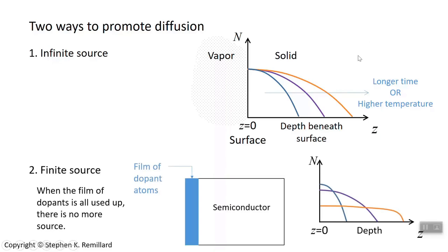And then there's the finite source method. No more vapor. Now instead, you put a film of the dopant atoms on the substrate. Let that film diffuse in. And usually you do that thermally. So you take your silicon, and you put this film of dopant material on, and then you heat it up, and the material slowly diffuses into the semiconductor. The longer you wait, the more even it diffuses in.